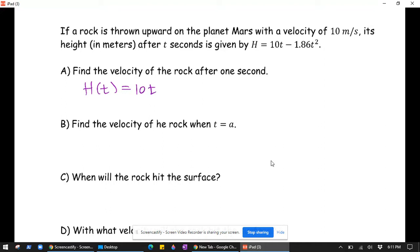So v of t would be h prime of t, which would be 10 minus 2 times 1.86.